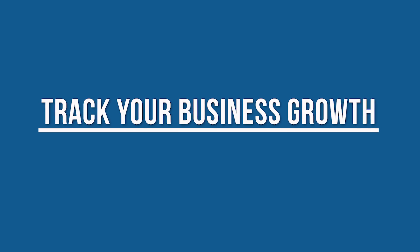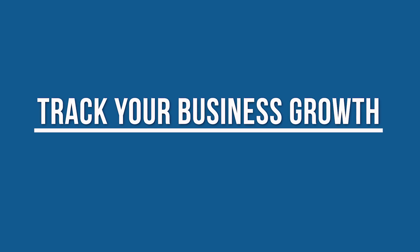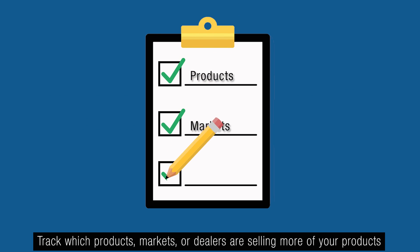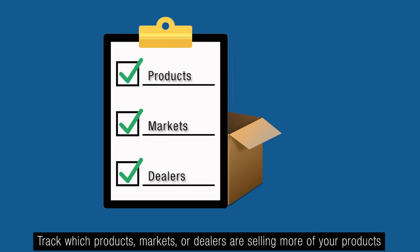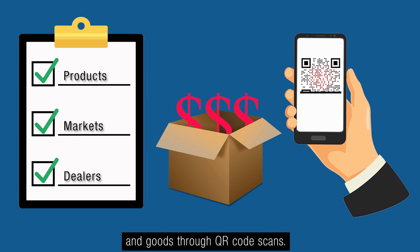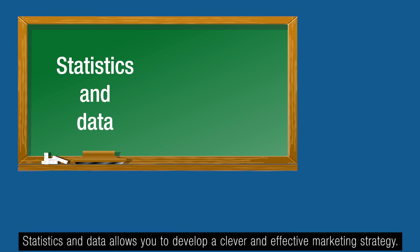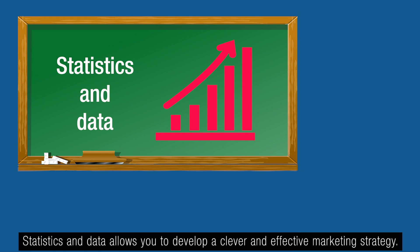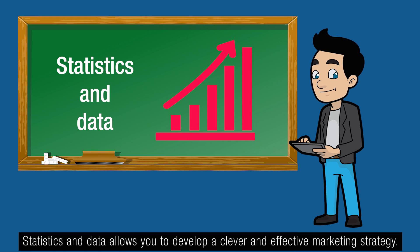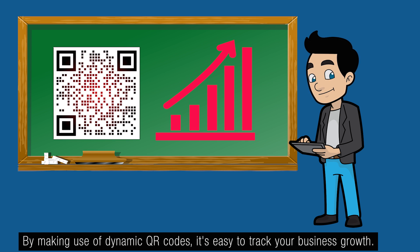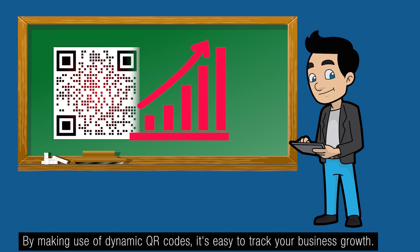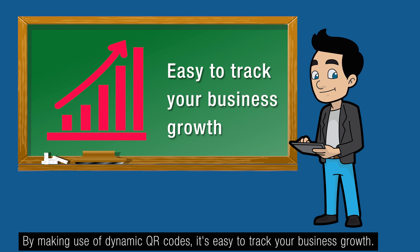Tip number three: Track your business growth. Track which products, markets, or dealers are selling more of your products and goods through QR code scans. Statistics and data allow you to develop a clever and effective marketing strategy. By making use of dynamic QR codes, it's easy to track your business growth.